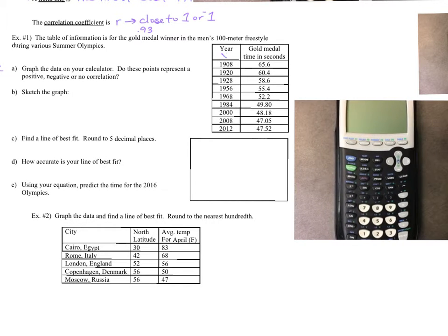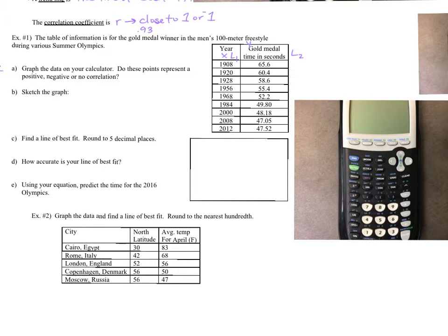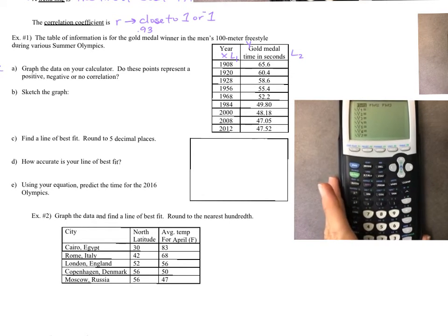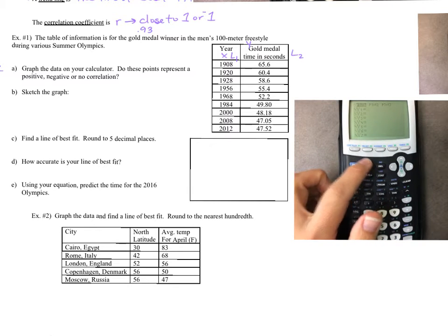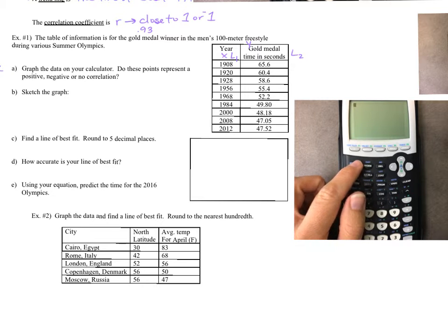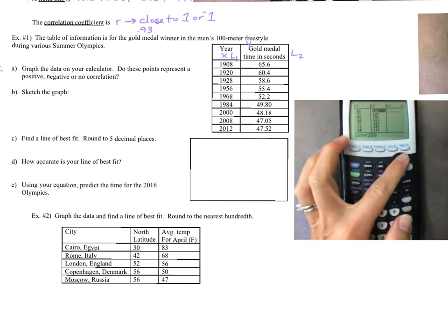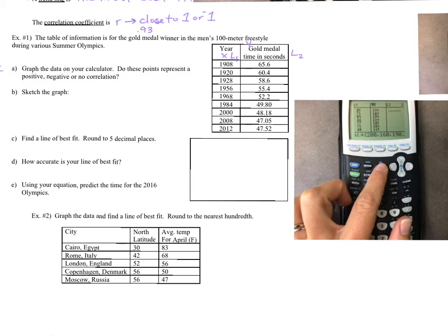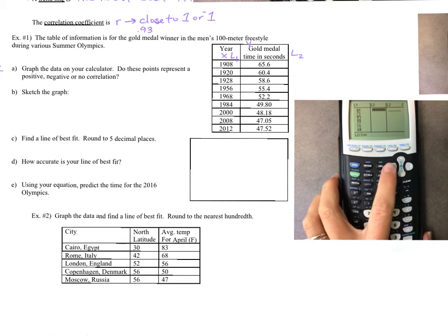On your calculator, turn it back on if it turned off. Hit second-quit to make sure there's nothing left in Y=, then go to stat and then edit — it's already on edit so you can just hit enter. I have stuff in here already; you're going to go up to L2, hit clear — not delete, we never want to delete the list — then hit enter. Then arrow left to L1, go up to L1, hit clear, and enter again. Now we're going to put the numbers in. Start with 1908 for L1.